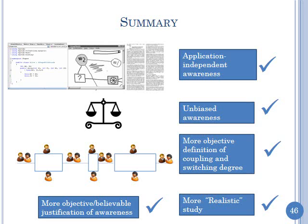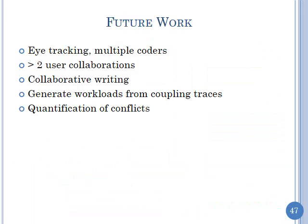In summary, we met all the goals: a more objective definition and a more realistic study than what existed before. We provided a more objective justification for awareness mechanisms. There is more to be done: using multiple coders, eye tracking to loosen assumptions, extending beyond two-user collaboration to N users, studying collaborative writing tasks, generating workloads from coupling traces to simulate applications, and investigating what degree of conflicts would have occurred had any arisen.